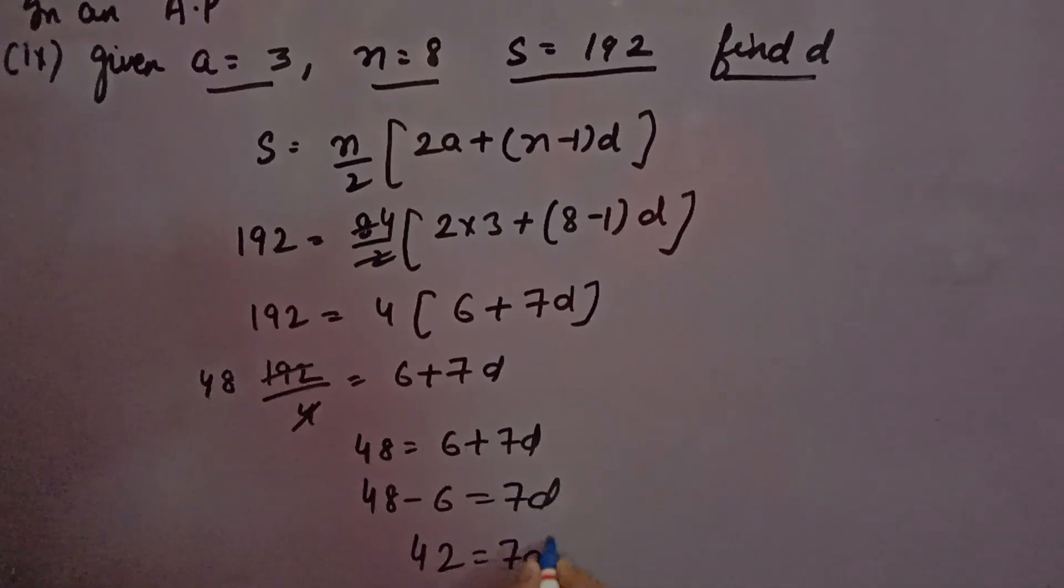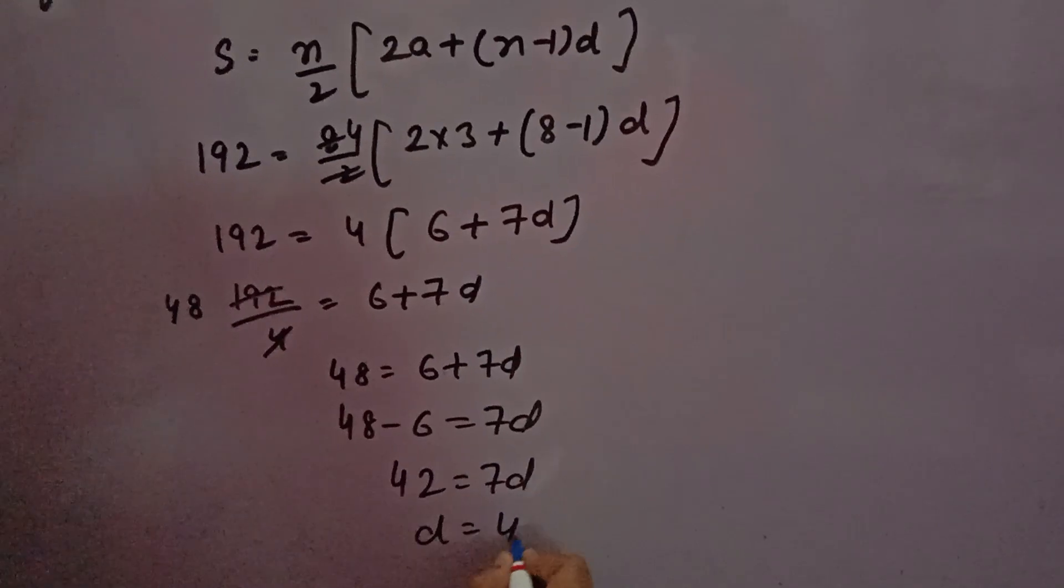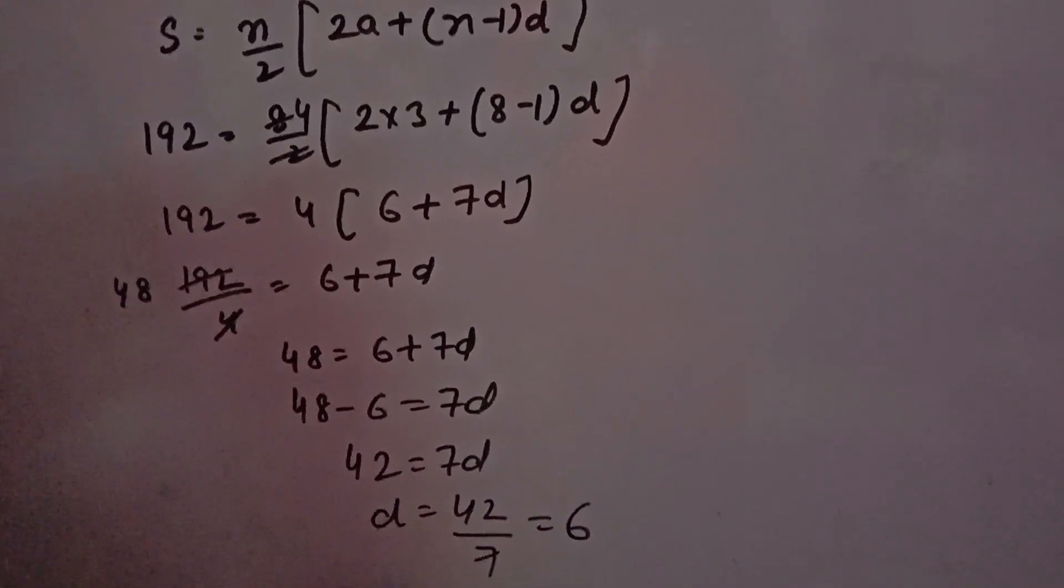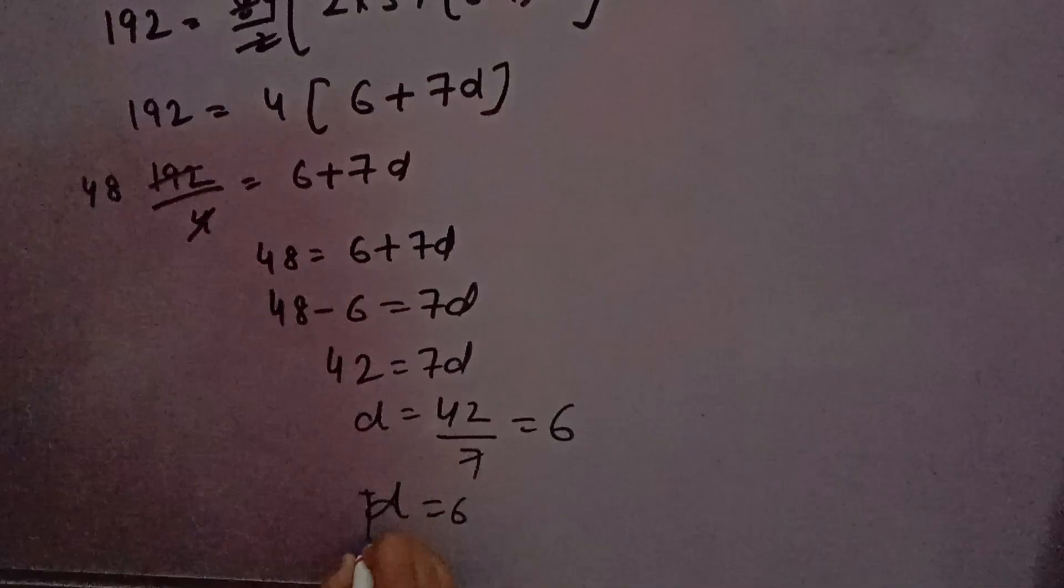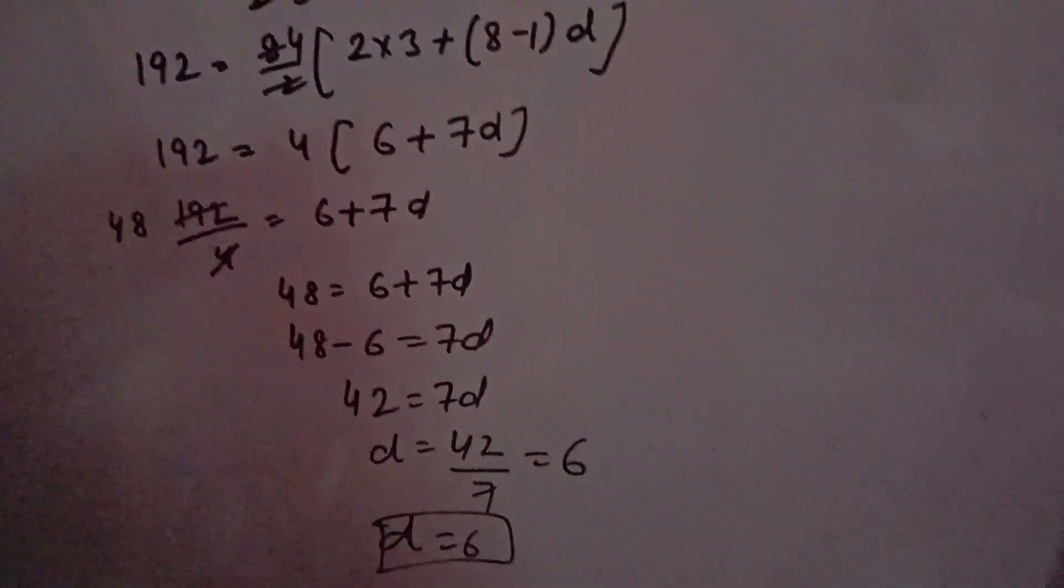42 is equal to 7d, so d will come 42 over 7, that is 6. So the common difference is 6. This is the answer, thank you.